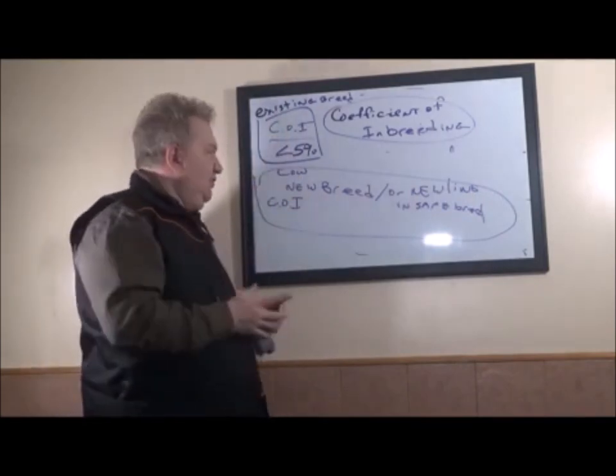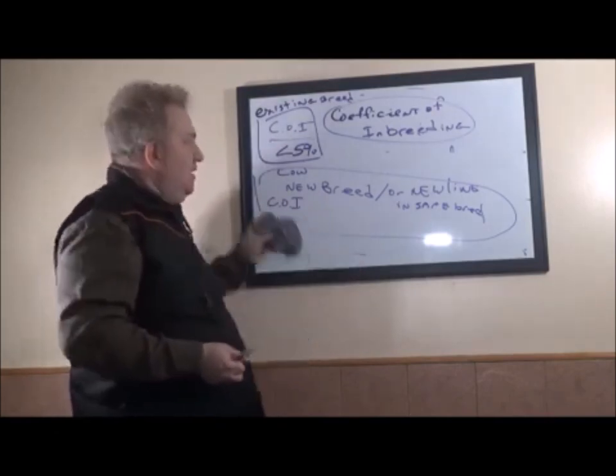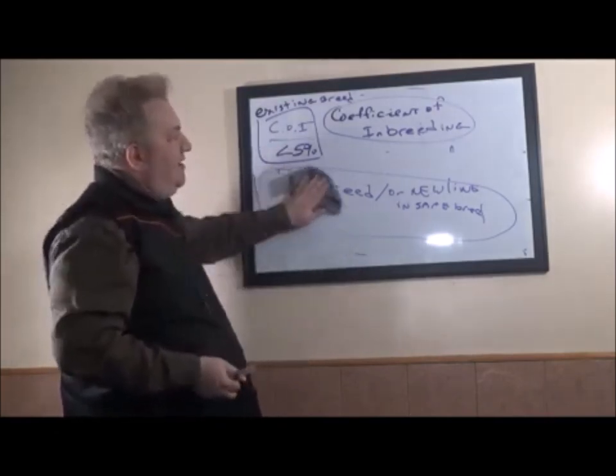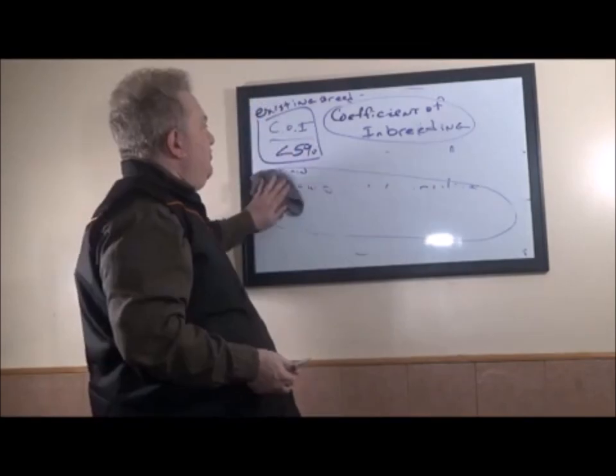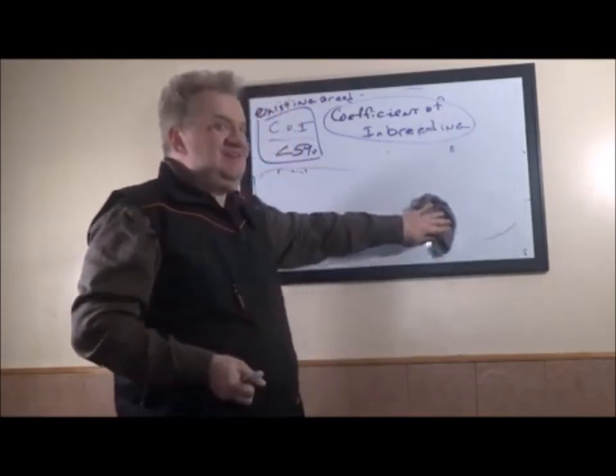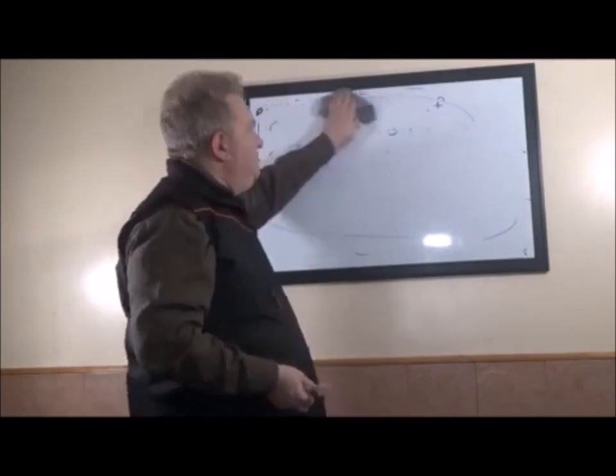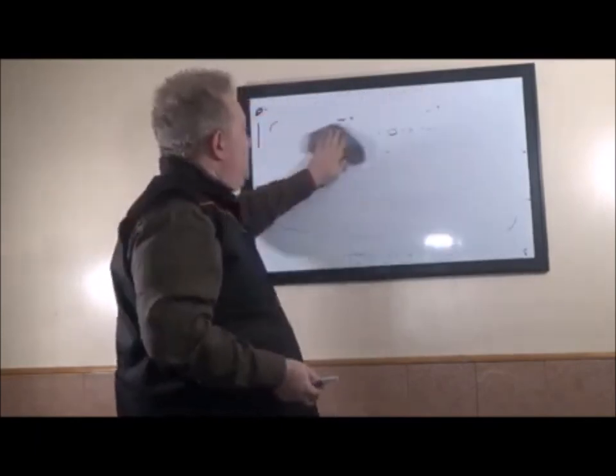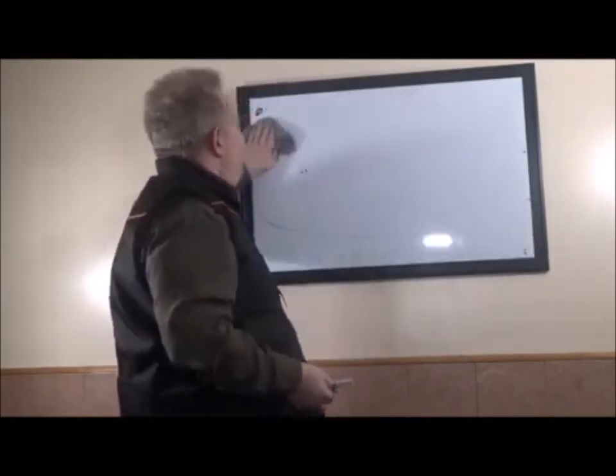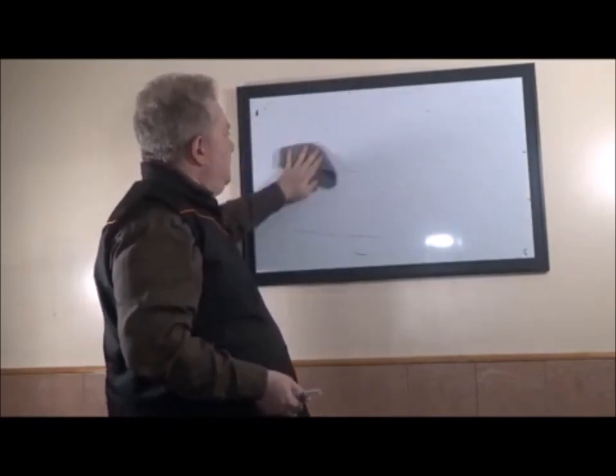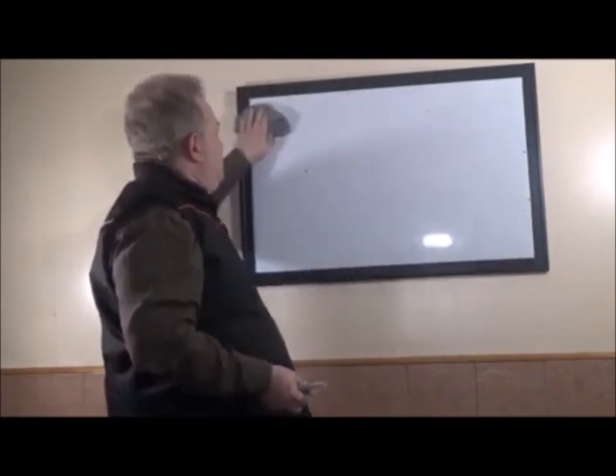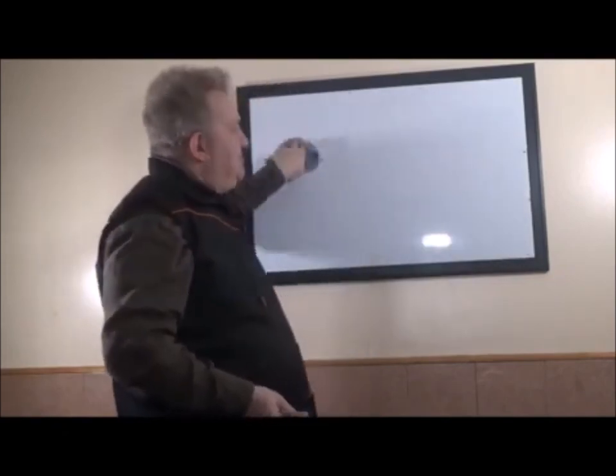Now, what do you get with a high COI? A high COI gives you what is called heterozygous genes versus homozygous genes. Let me take a minute to explain that. Because we have to go a little bit into biology in order to explain these concepts without which you cannot understand these concepts.